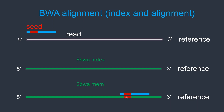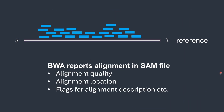In today's tutorial I will show a live demonstration of how we can use the commands to index the reference genome and align using BWA MEM. After aligning all the reads into the reference genome, BWA reports this alignment information in a SAM file. A SAM file is a text file that contains alignment quality information, the location of alignment, and has many flags for alignment description.